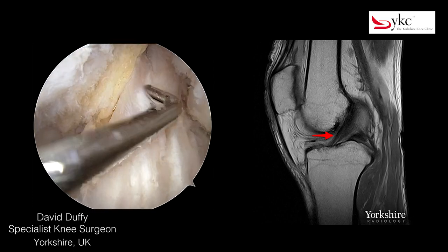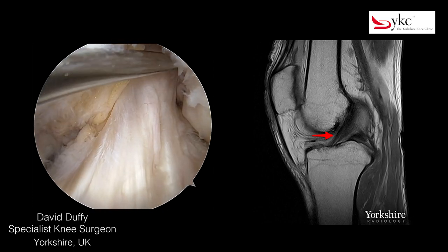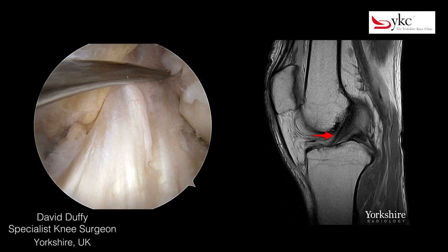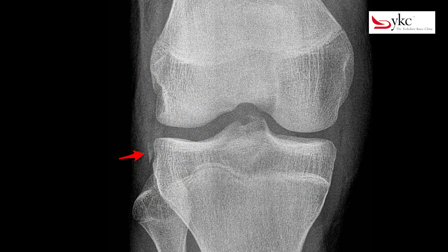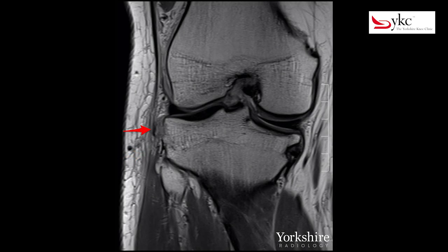The ACL is the dark structure running diagonally that is highlighted. Whilst an x-ray may give only limited information, if a small avulsion fragment called a Segond fracture is seen, over 90% of these patients will have torn their ACL.